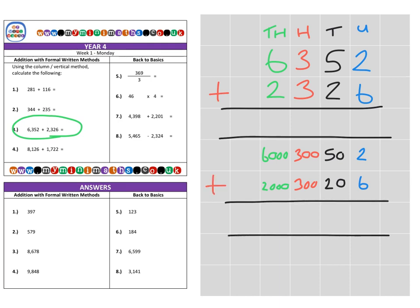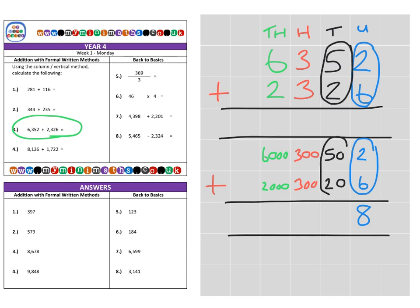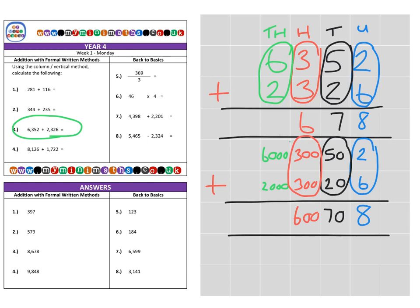We can add those together. First, looking at our units: two units add six units gives us a total of eight. On to the tens: we have five tens add two tens, which is 50 add 20, giving us 70. Then the hundreds: three hundreds add three hundreds, which is 300 add 300, giving us a total of 600. And finally for the thousands column, we have 6,000 add 2,000, giving us 8,000. For a final answer of 8,678.